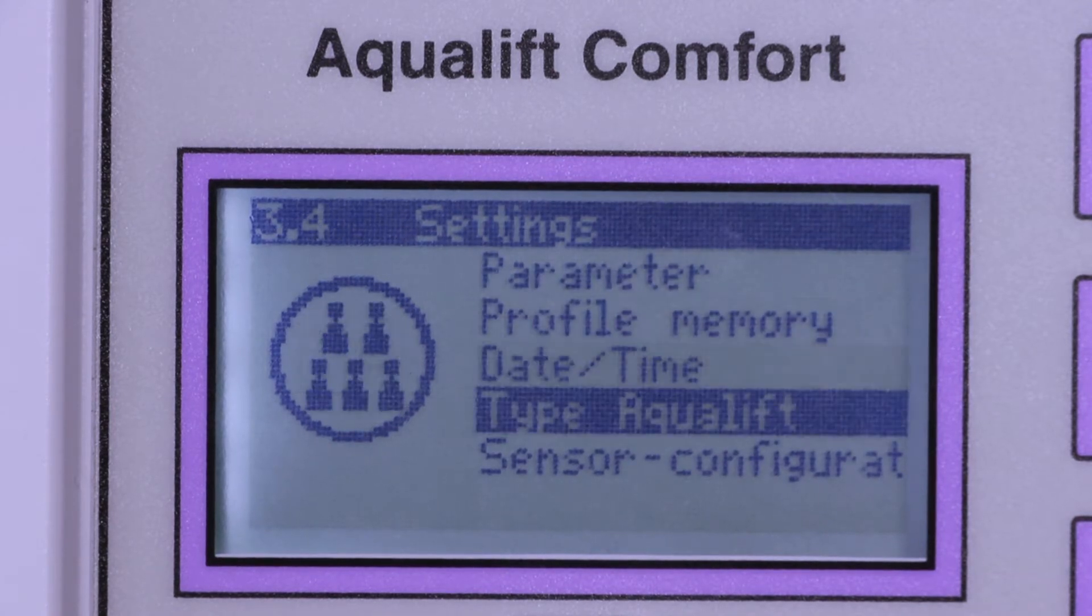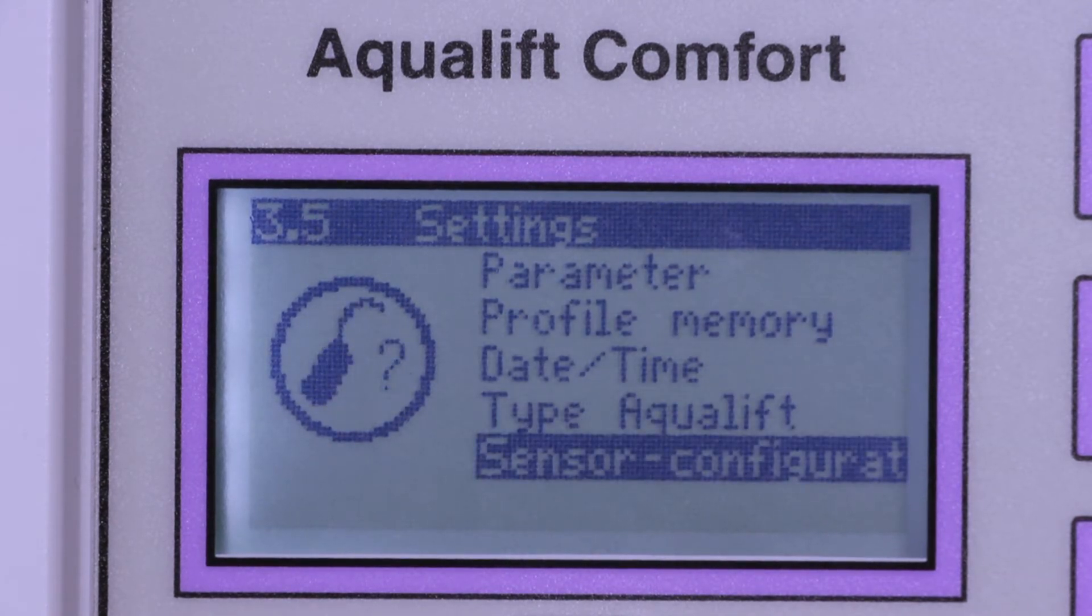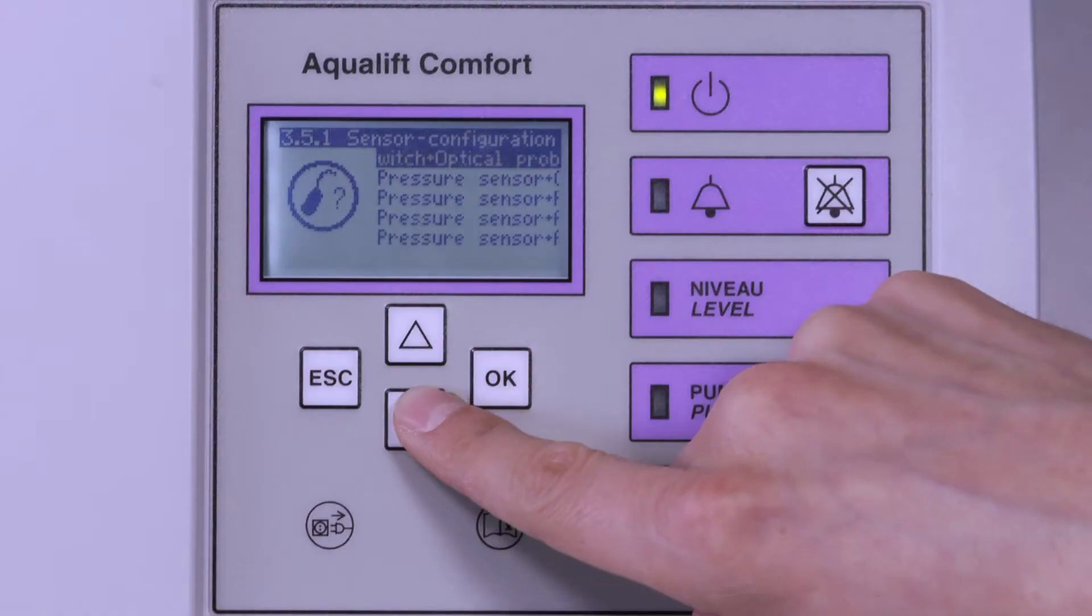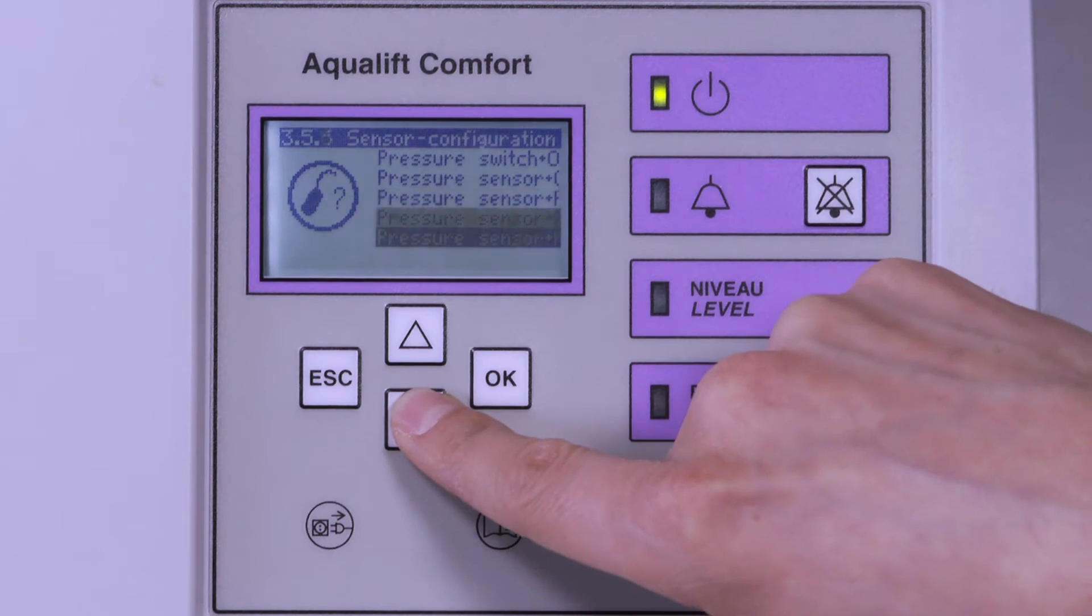go to the settings menu and select sensor configuration. Then confirm the mounted sensors with the add-on bubble formation by pressing the OK button.